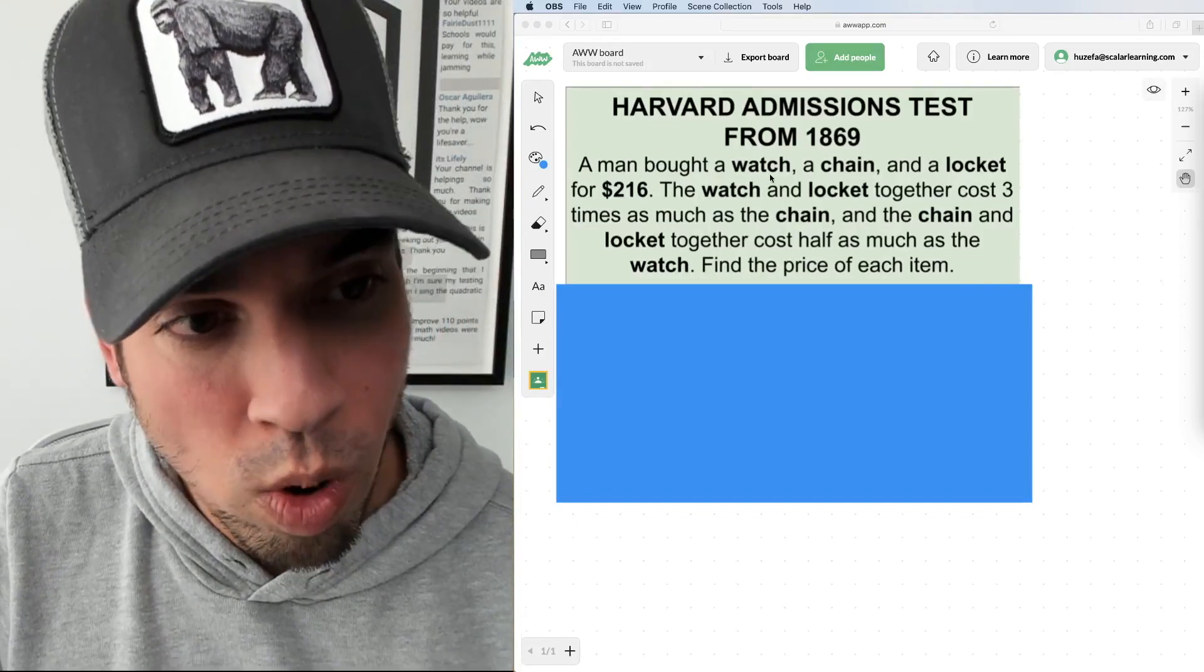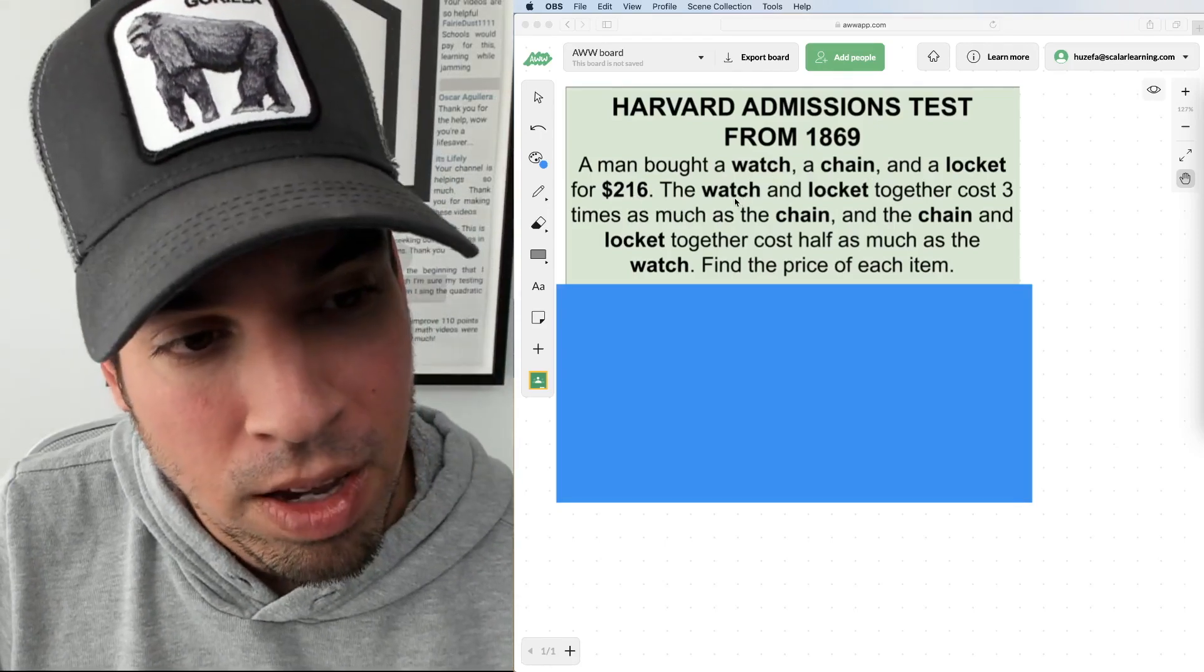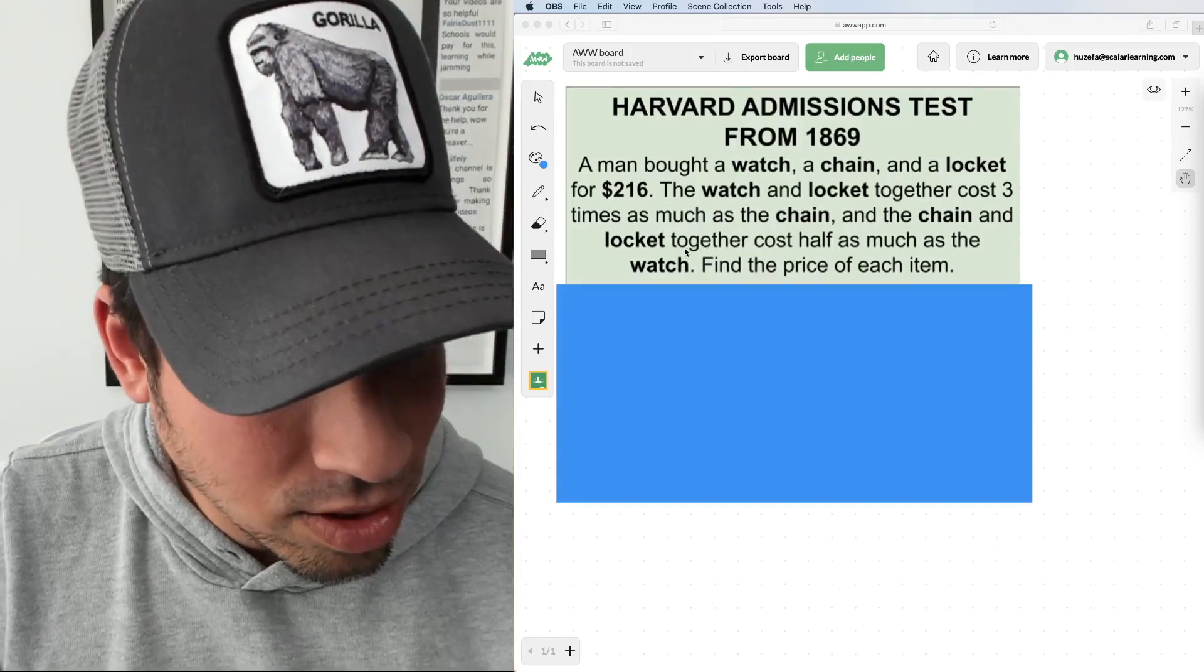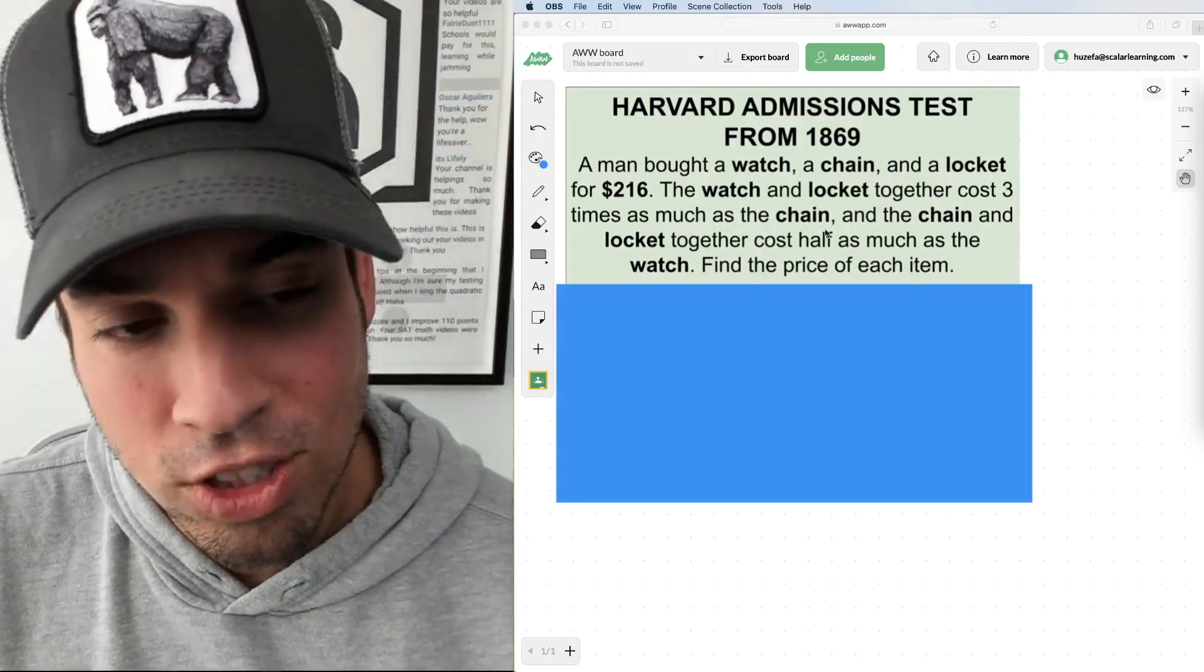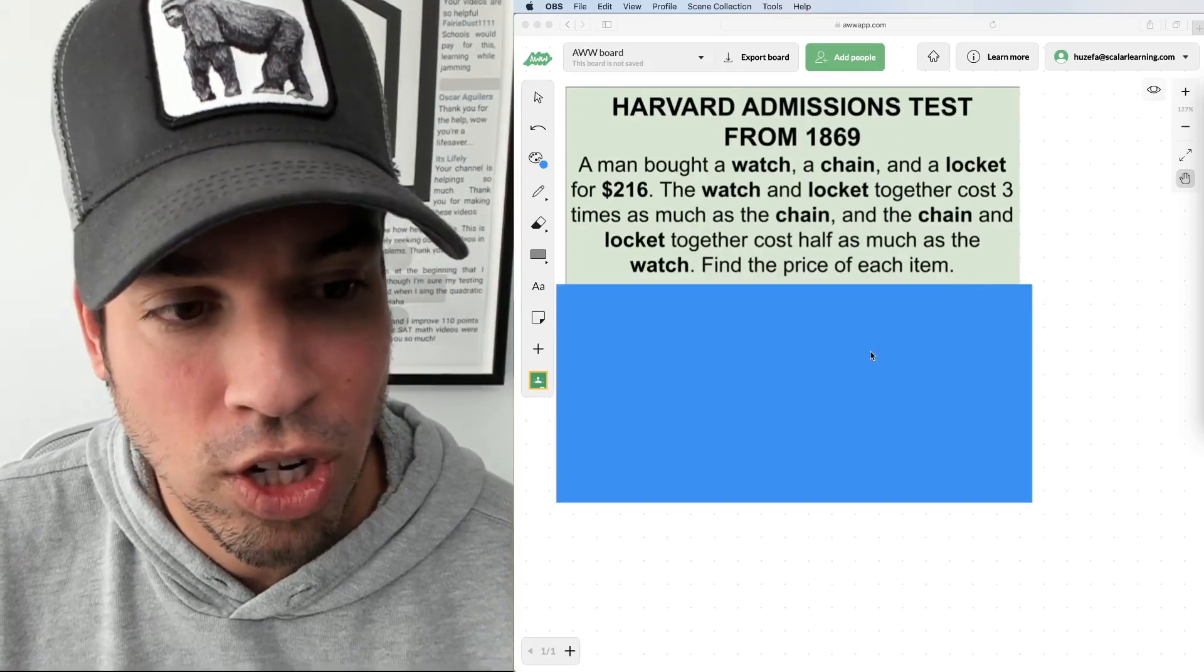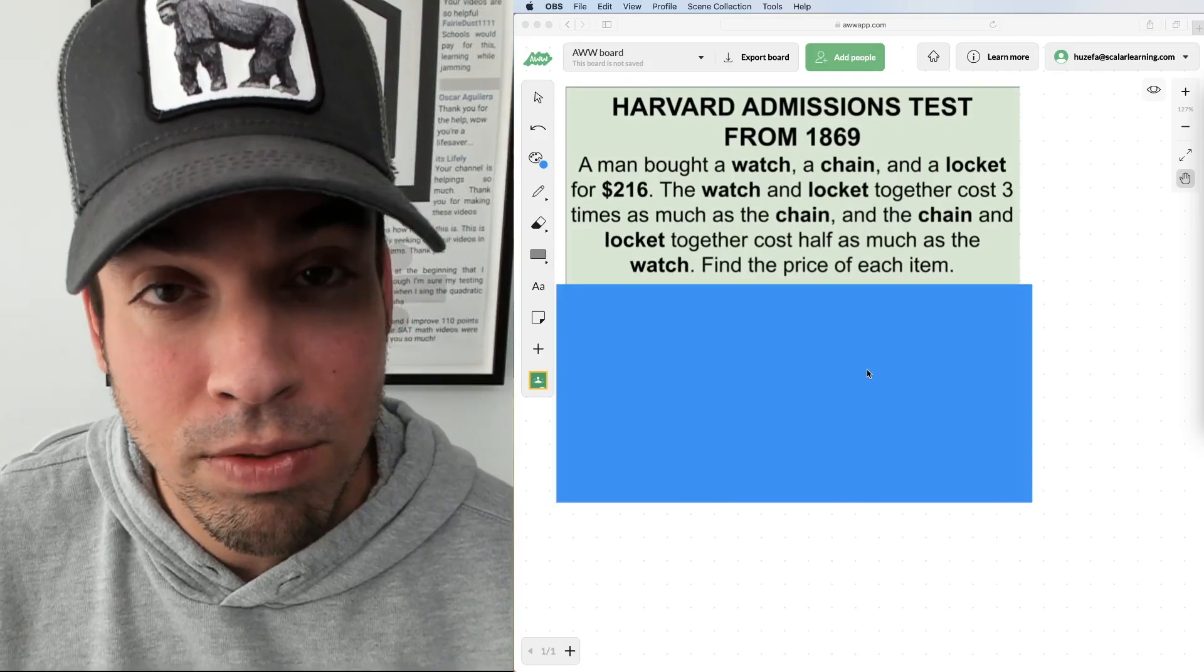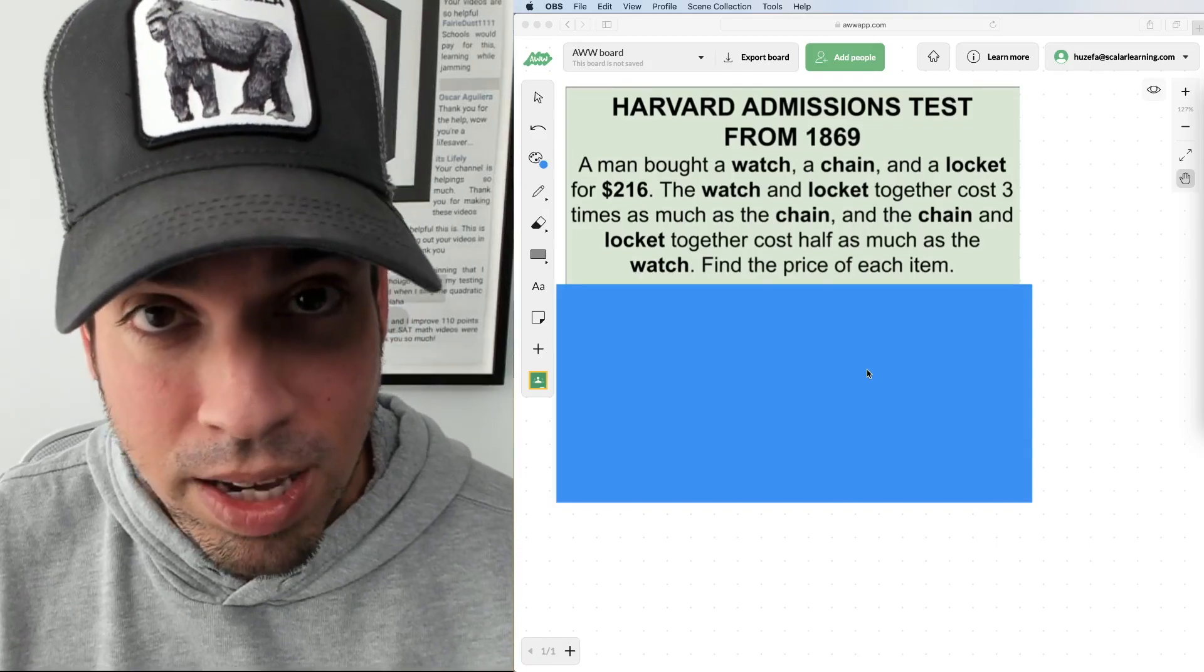It says a man bought a watch, a chain, and a locket for $216. The watch and locket together cost three times as much as the chain, and the chain and locket together cost half as much as the watch. Find the price of each item.